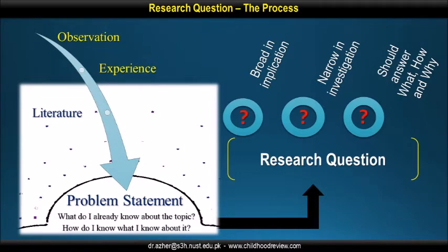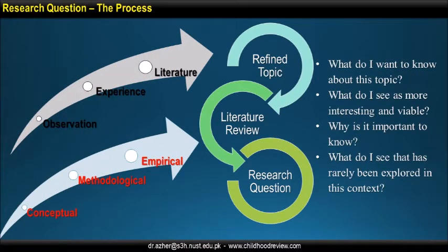Remember, research questions must be broad in their implications, narrow in their investigation, and they should answer what, how, and why. There are more questions you can ask and write in your memo book — for example: What do I want to know about this topic? What do I see as more interesting and viable? Why is it important to know? And what do I see that has already been explored in this context? These questions are about your intentions, interest, curiosity and the importance of the topic. At this stage, you are also rationalizing your research interest and making it clear why it is researchable.